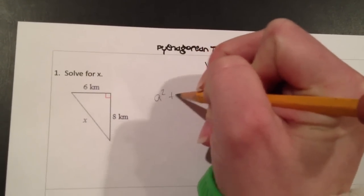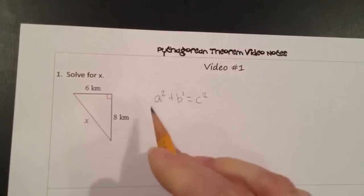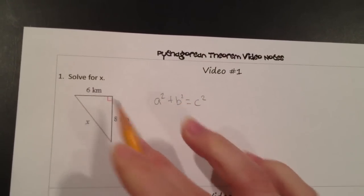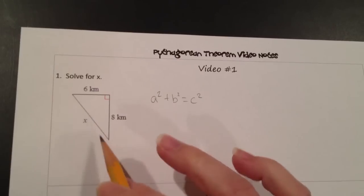We know that a squared plus b squared is equal to c squared. Well, a and b are referring to the legs of the right triangle, and c is referring to the hypotenuse.